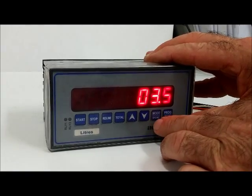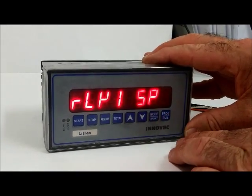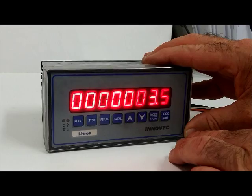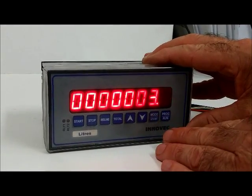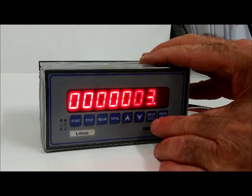In run mode, you can also, by hitting the mode button, access the set point for relay 1, so you can change it without going into the programming mode.